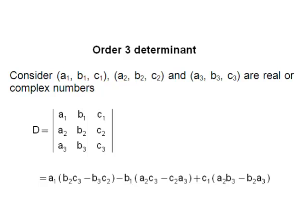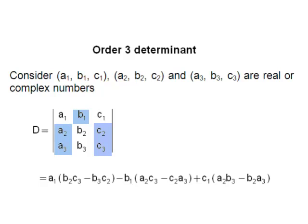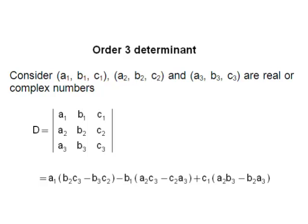The value or expansion of this determinant is given by: A1 into the second order determinant (B2 C2, B3 C3), minus B1 into the second order determinant (A2 C2, A3 C3), plus C1 into the second order determinant (A2 B2, A3 B3). Finally, the value of the determinant is A1(B2C3 minus B3C2) minus B1(A2C3 minus A3C2) plus C1(A2B3 minus A3B2).